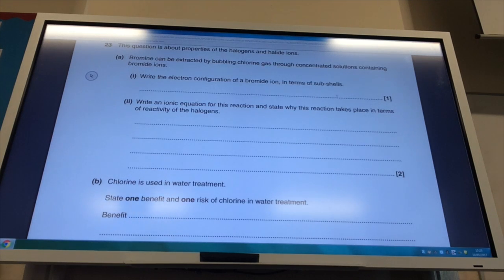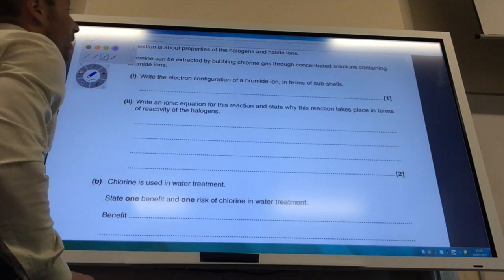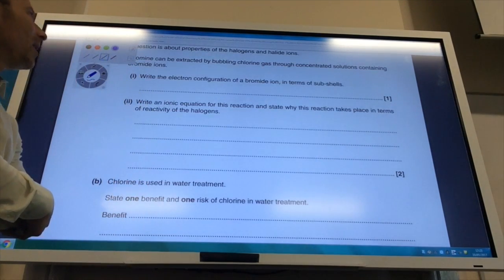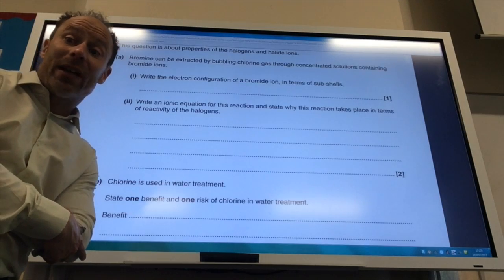Right, okay, so question 23 now and we are looking at the properties of halogens and halide ions. So bromide can be extracted by bubbling chlorine gas through concentrated solutions containing bromide ions. Write the electronic configuration of the bromide ion.